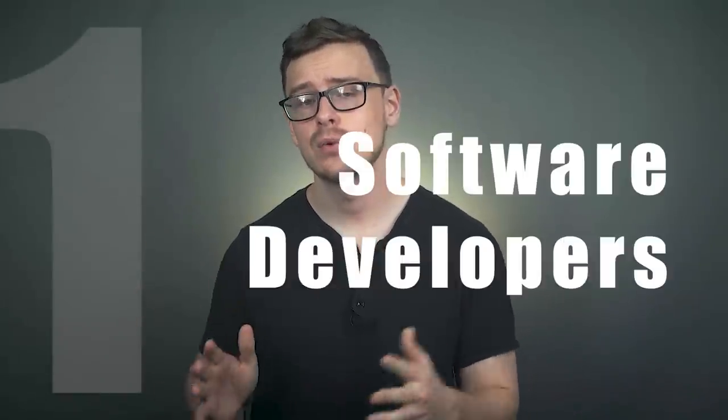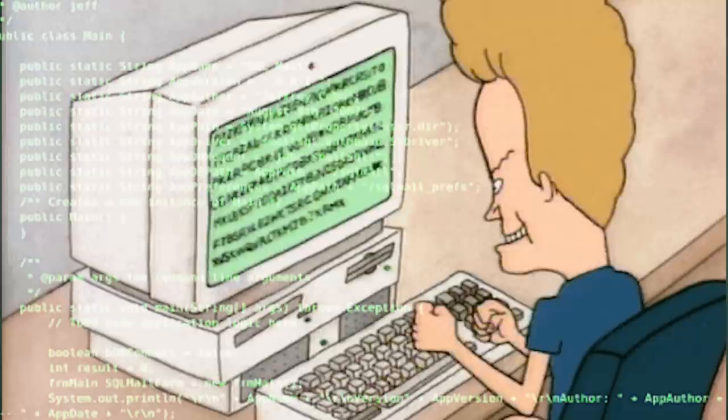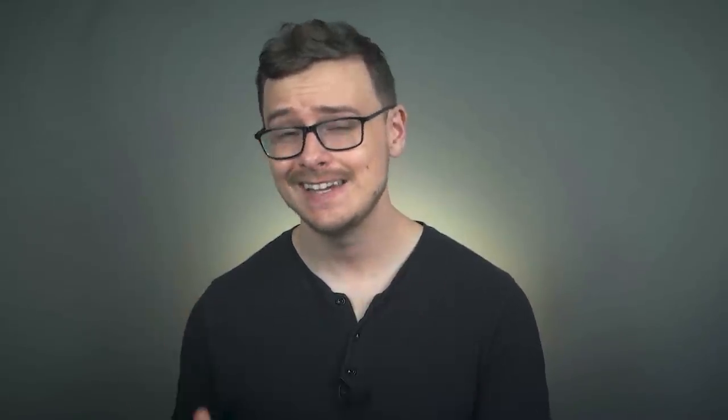Number one on the list is going to be software developers. No surprise whatsoever here. I've told you guys over and over again, this is probably the biggest opportunity out of any type of career out there. So a software developer very simply is going to be somebody who writes code for software. Over the next 10 years, there's going to be an insane 316,000 positions that are opening up. And on top of that, software developers already make really good money, about $107,000 a year.